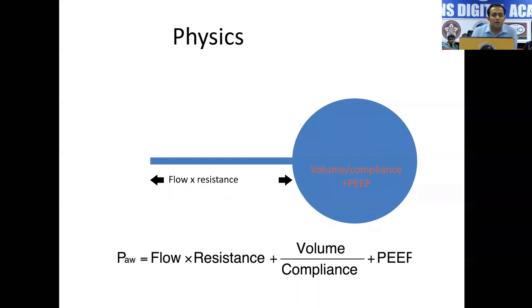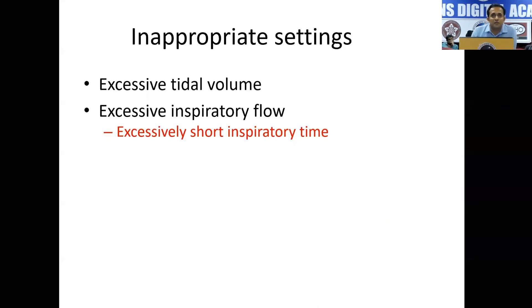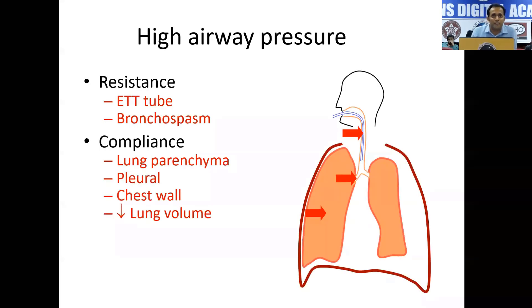Pressure can be increased by increased flow, increased resistance, or a real lung problem. The compliance of the lung could have been reduced because of COVID-19 disease. Inappropriate settings — if you set excessive tidal volume not in line with the ARDS network strategy, or if the inspiratory time is too short and you have to deliver the tidal volume in a very short interval of time — then there can be elevation in airway pressure. So it can be a resistance problem or a compliance problem.